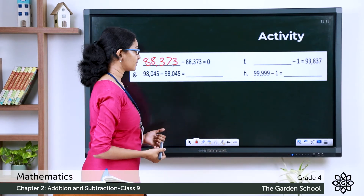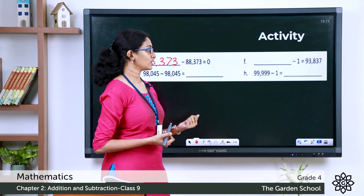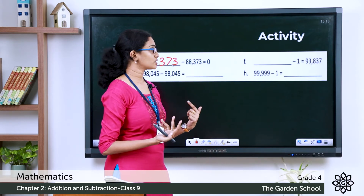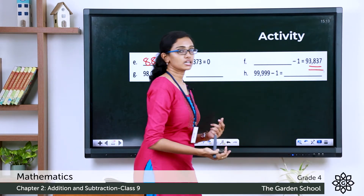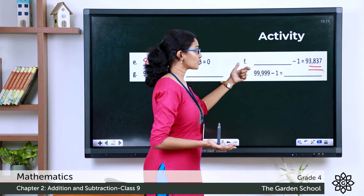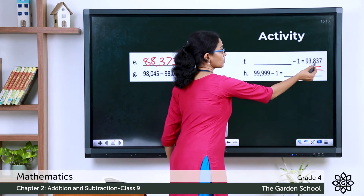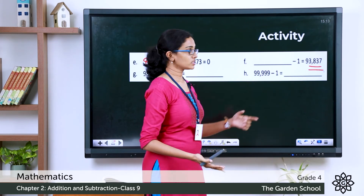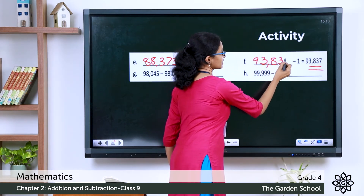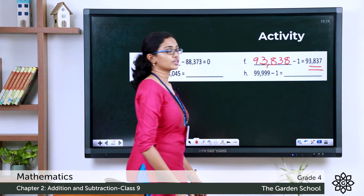Question F: blank minus 1 equals 93,837. We know any number minus 1 gives the predecessor. So we are given the difference, and 1 was subtracted to get it. We need the number that comes after 93,837, which is 93,838. So 93,838 minus 1 gives you 93,837.